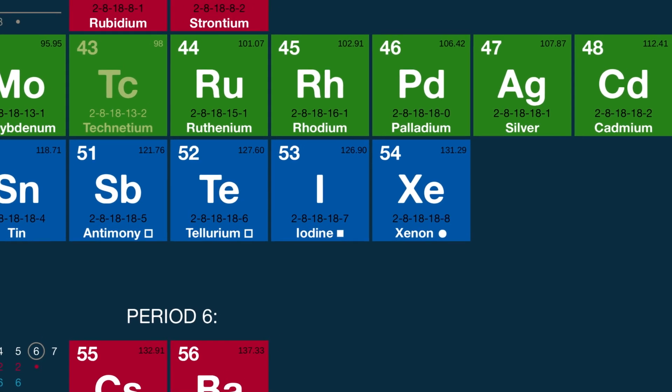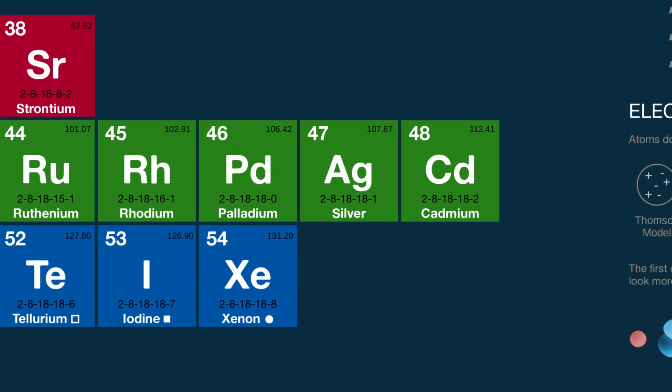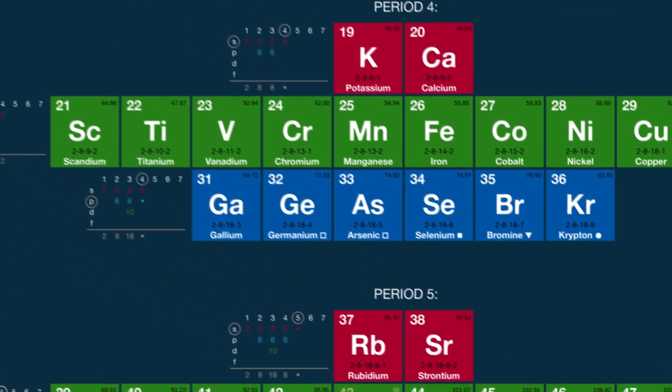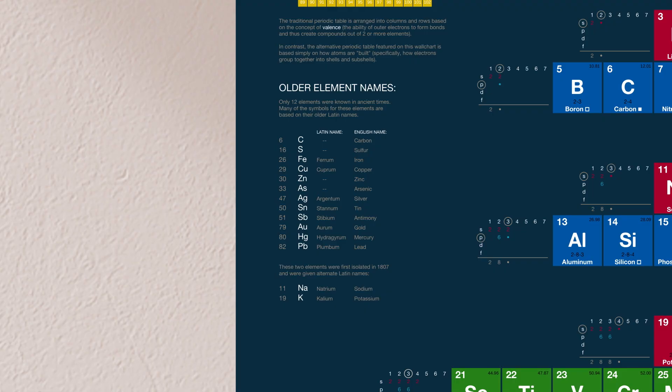Now, you might have wondered why some of the symbols for the elements don't seem to match nicely with their names. Like, why is silver AG instead of maybe SL? Well, in ancient times, only 12 elements were known and named. Therefore, in most cases, the symbols for these elements are based on their old, Latin names as opposed to their new ones. So, for example, FE is based on ferrum, which is the Latin name for iron.